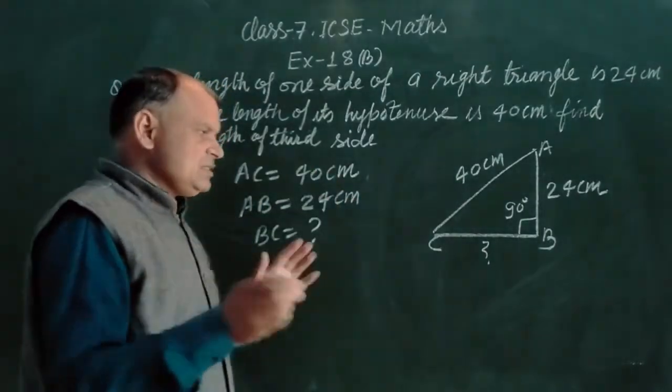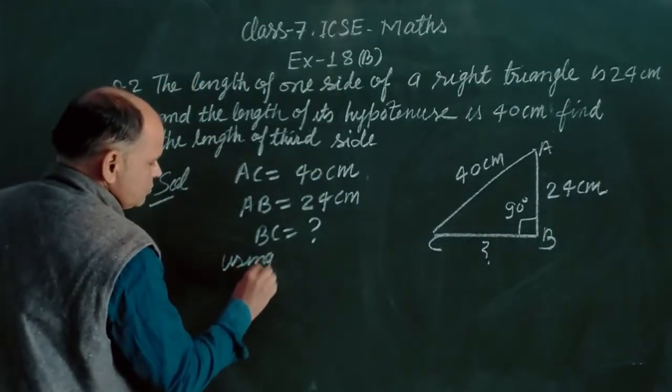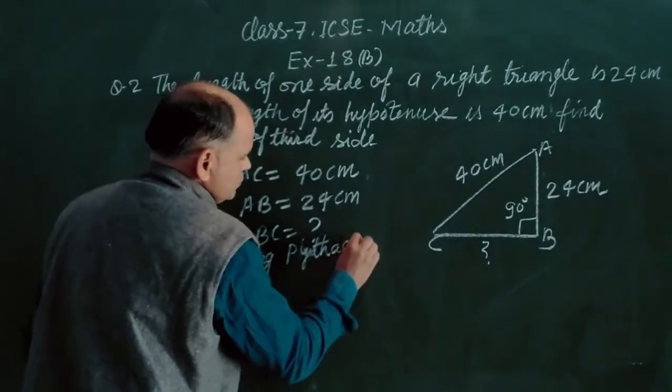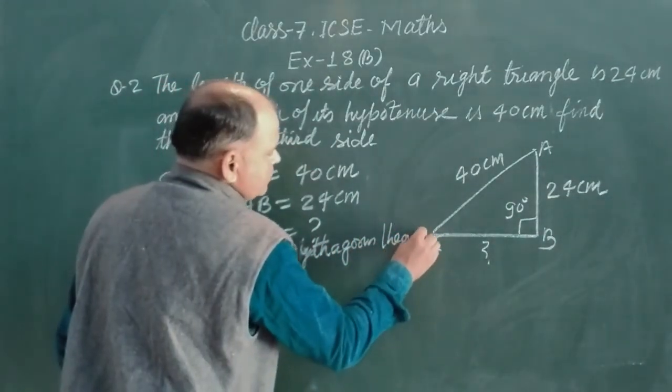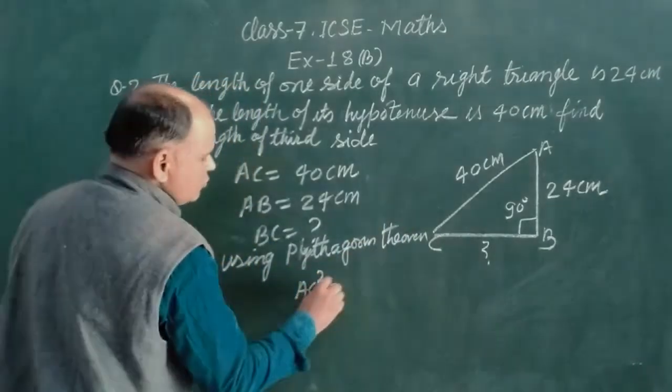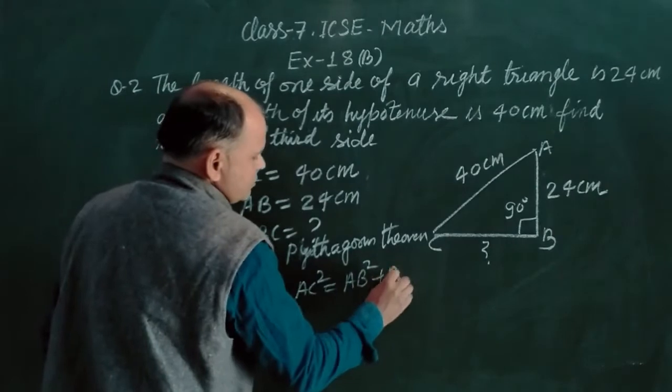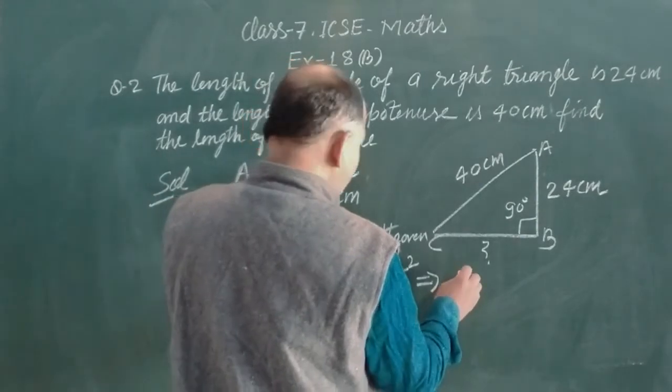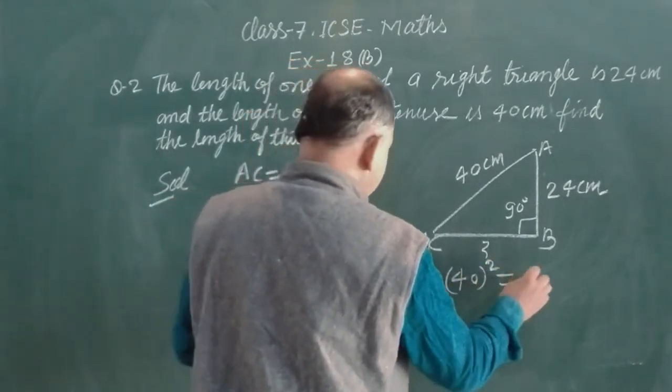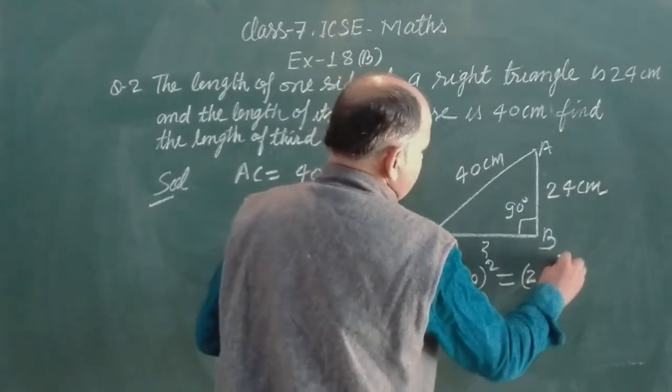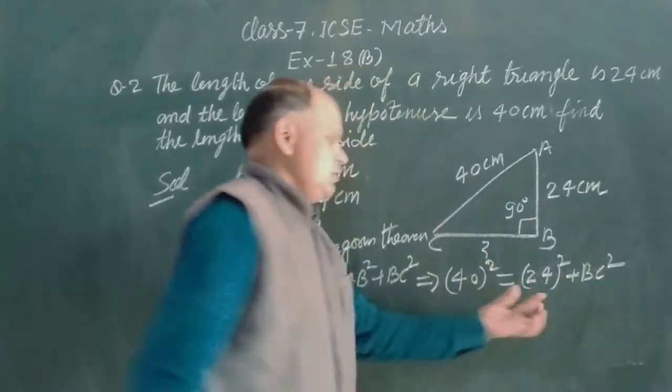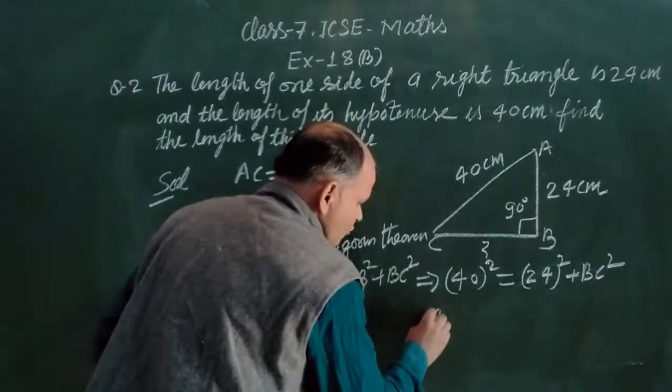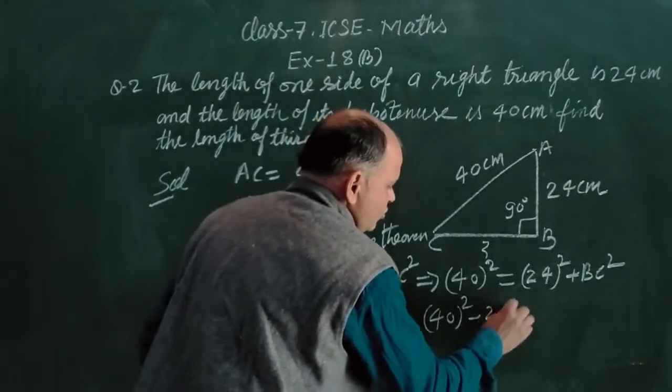So we use Pythagoras theorem in this. This is AC square equal to AB square plus BC square. Now we put these values. AC is how much? 40 square, and AB is 24 square plus BC square.